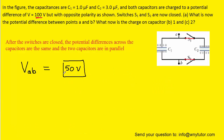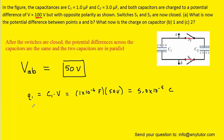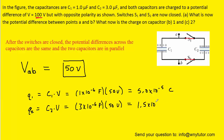Now that we have the new potential difference between points A and B, we can easily calculate the charge on capacitor 1 and capacitor 2. For capacitor 1, we take the capacitance of 1 times 10 to the minus 6 farads and multiply it by the new potential difference, giving a charge of 5 times 10 to the minus 5 coulombs. A similar calculation for capacitor 2 gives a charge of 1.5 times 10 to the minus 4 coulombs. Those are the correct answers to parts B and C.